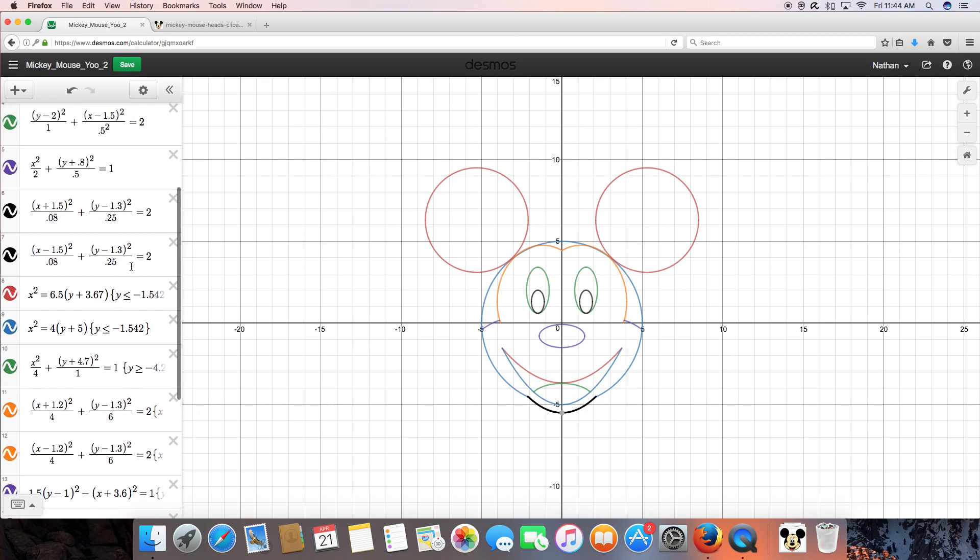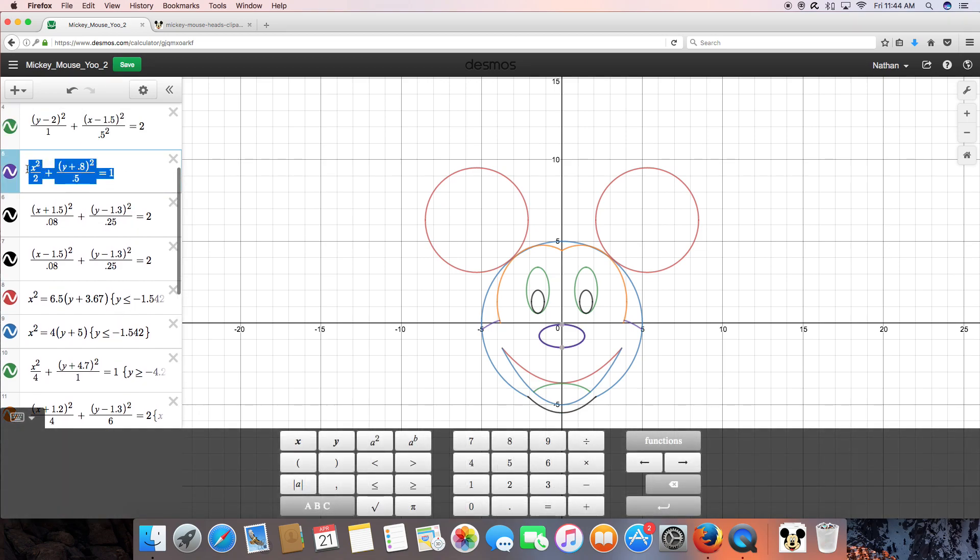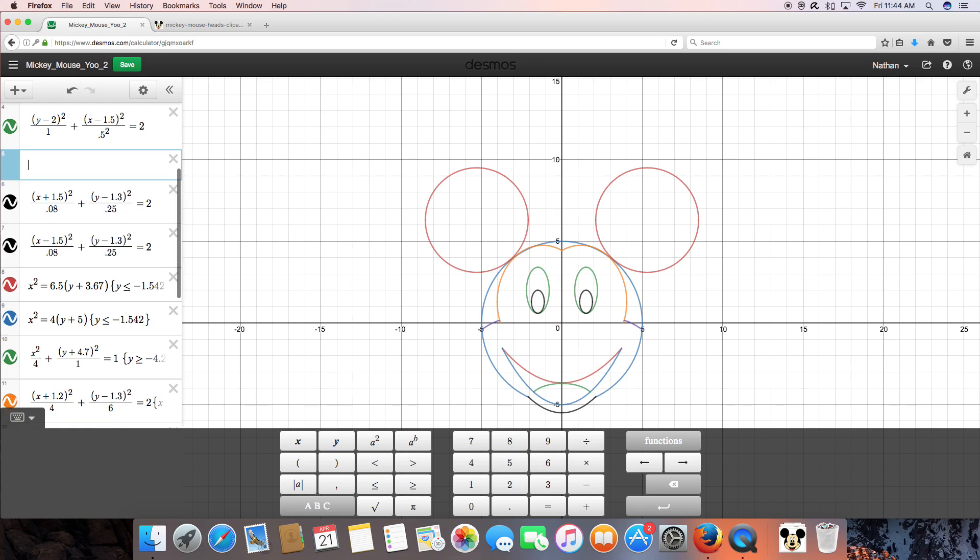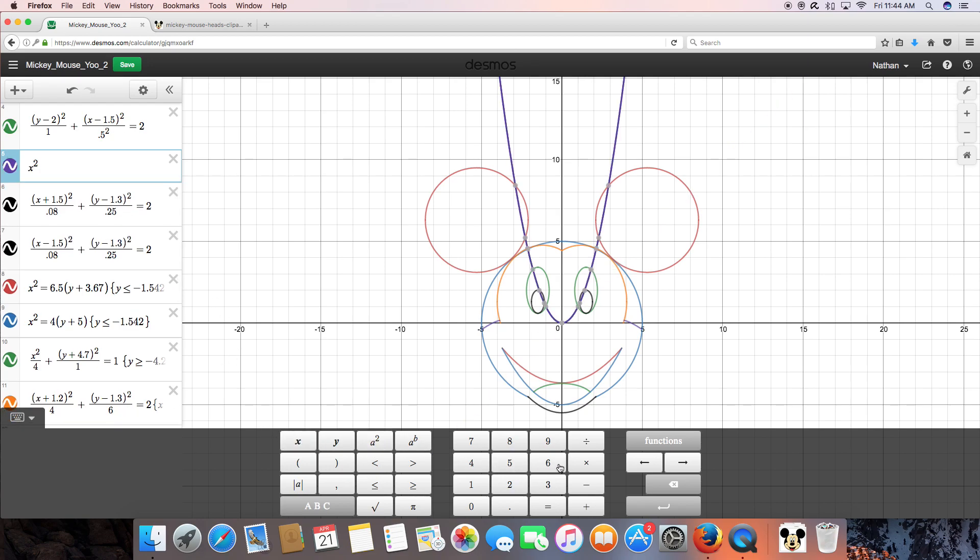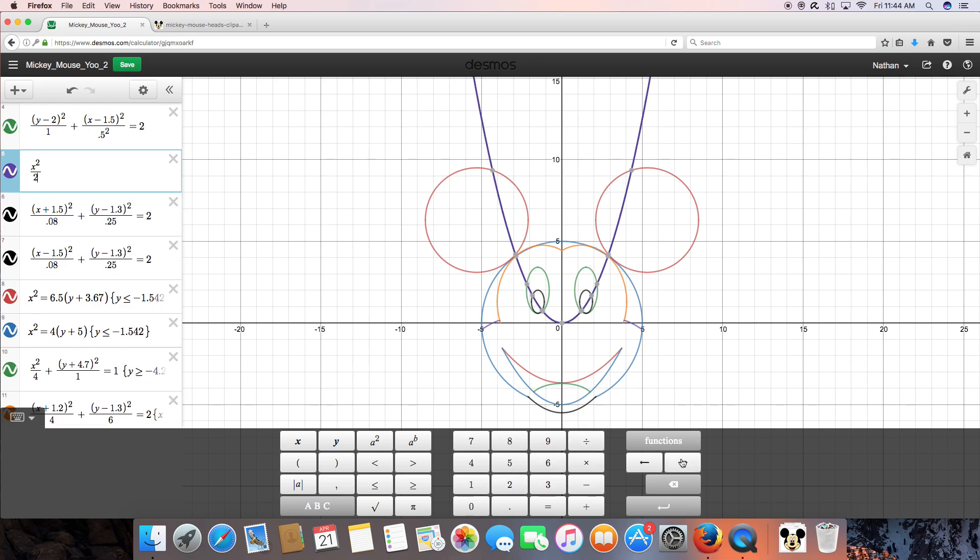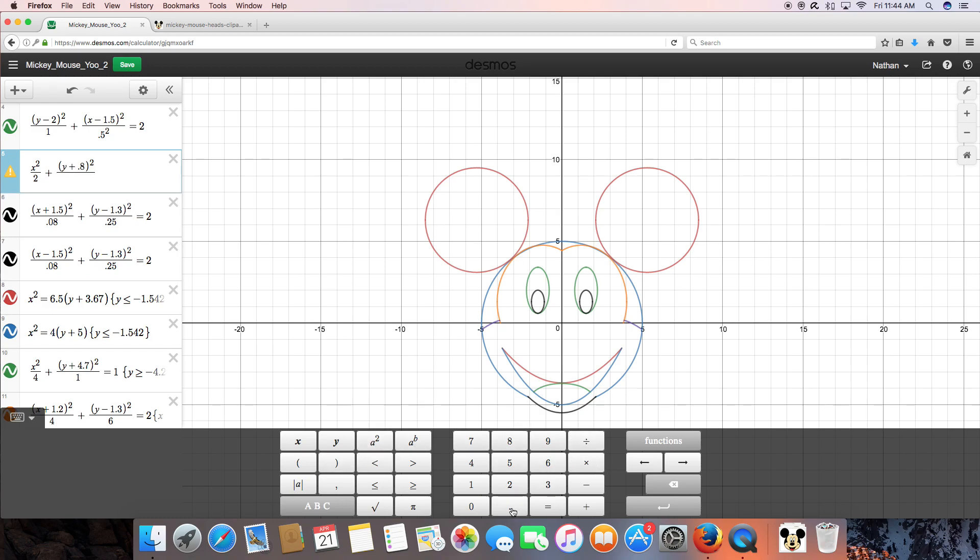Let's start off with the nose. Now the nose is an ellipse, which expands horizontally. The equation I used was x squared divided by 2 plus y plus 0.8 in parentheses squared all over 0.5 is equal to 1. And there you have it, your nose right there. Now let's move on to the chin.